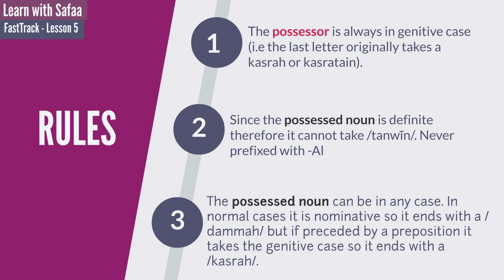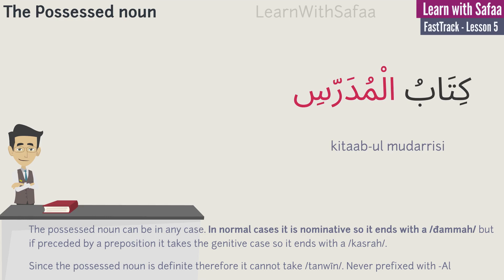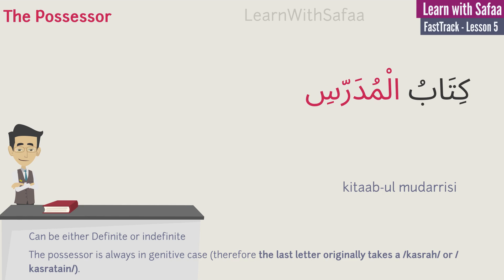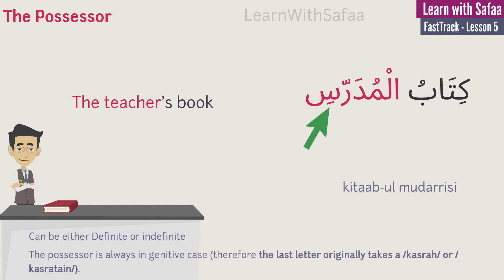Now let's see some examples. Kitab-ul-mudarrisi — the teacher's book. In this possessive expression, the word kitab (book) is the possessed noun, and it is in the nominative case, ending with a dhamma. The noun al-mudarrisi is the possessor, which is always in the genitive case — the last letter takes a kasra or kasratain. Let's repeat: kitab-ul-mudarrisi — the teacher's book.